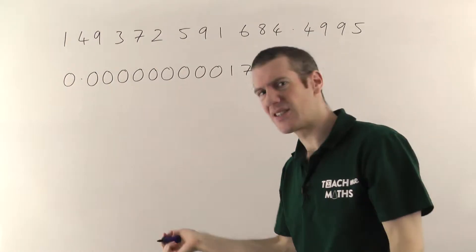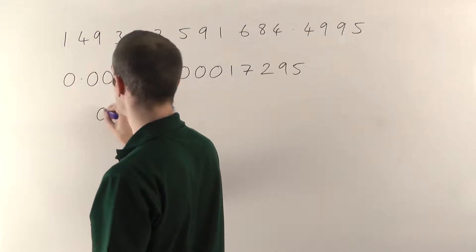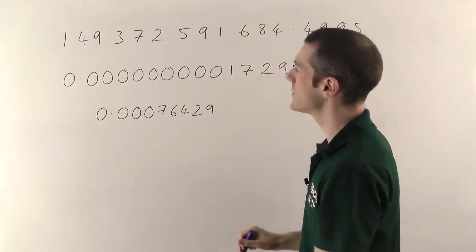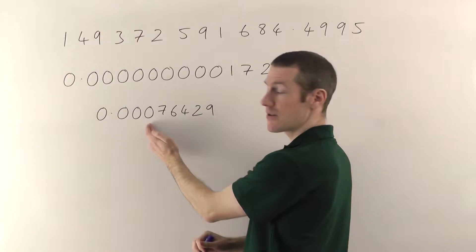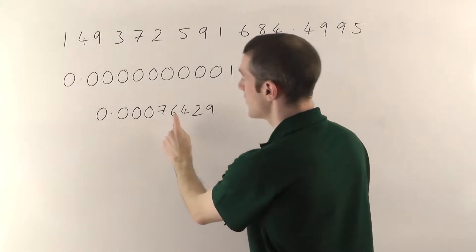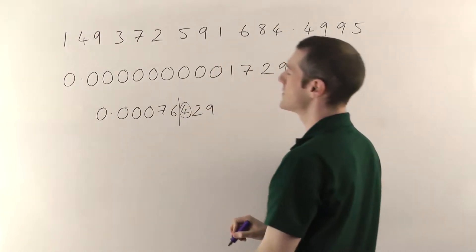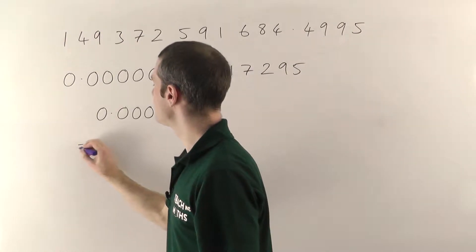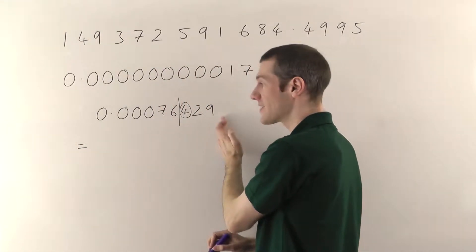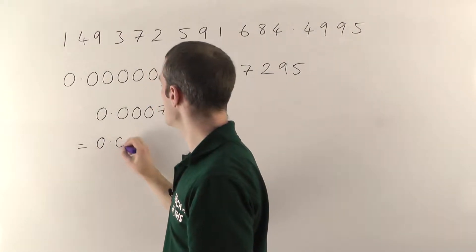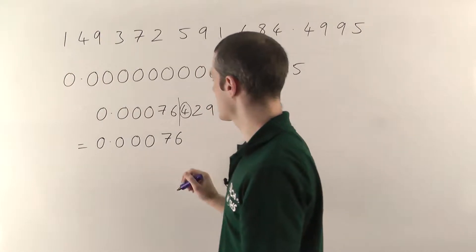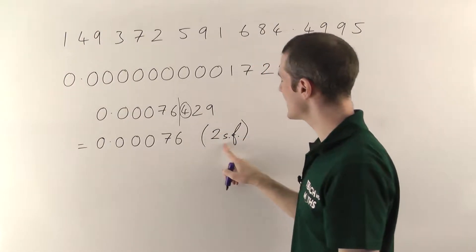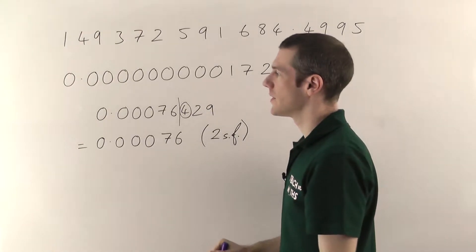The way you round in practice is exactly the same as for decimal places — it's just working out where you start that can be tricky. Significant figures start with the first non-zero digit. Let's do an example: 0.00076429 rounded to two significant figures. You ignore the leading zeros — that's your first significant figure, that's your second. You put your line there, look at the next digit — it's less than five, so this digit stays the same. You keep all the digits before the line and throw away everything after: 0.00076, to 2 significant figures.